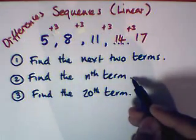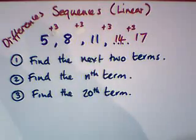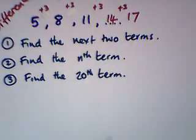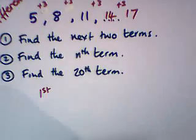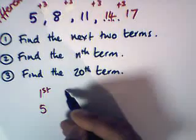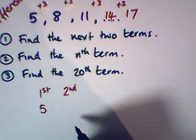Now, this is the most common question that you'll get: find the nth term. To find the nth term, we have to look at the sequence. The first term of the sequence, term number 1, is 5. Term number 2, or the second term of the sequence, is 8.